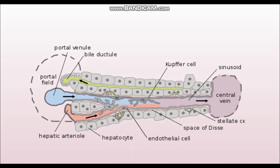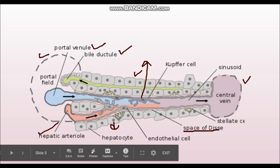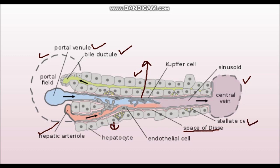Going to the normal physiology of the liver before pathogenesis: there is a portal triad, a central vein, plates of hepatocytes, and a sinusoid. The portal triad consists of a bile ductule, portal vein, and hepatic artery. Connecting them is a sinusoid lined by continuous endothelial cells. Between the endothelial cells and hepatocytes is the space of Disse, which contains stellate cells responsible for fibrogenesis in cirrhosis.